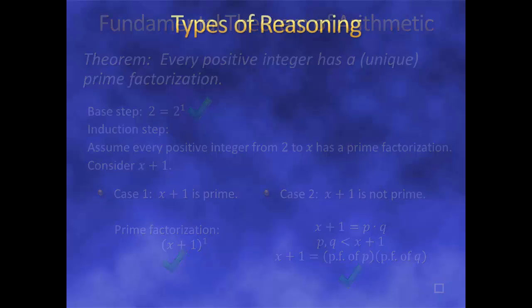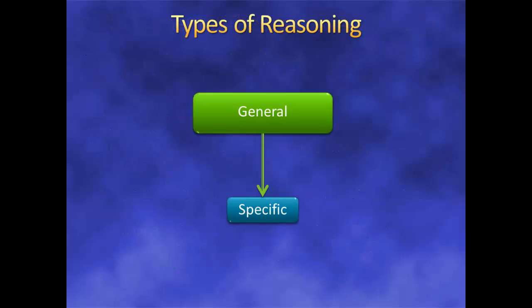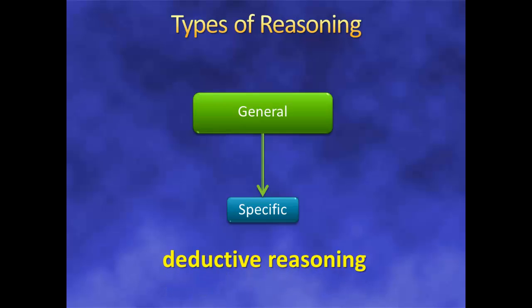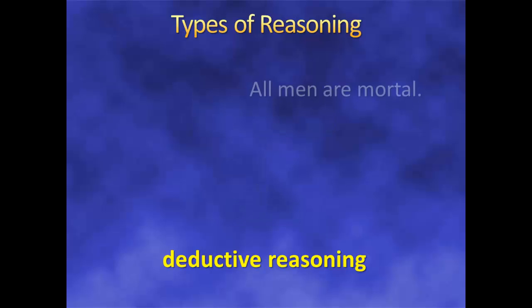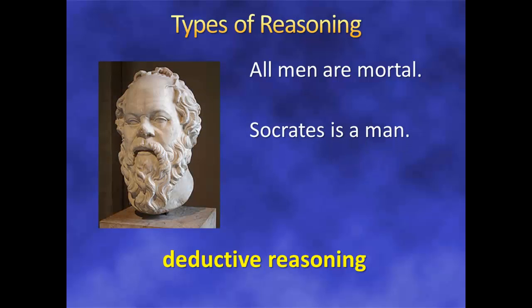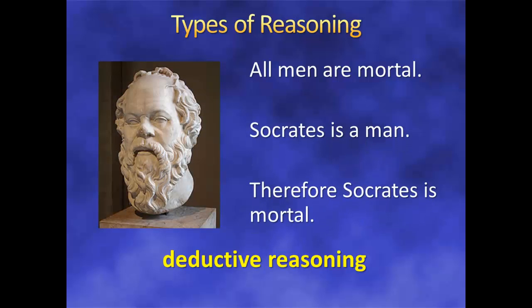By the way, throughout this course we've been looking at basic general principles and applying them to specific situations. This type of reasoning — going from general down to specific — is called deductive reasoning. The classic example is the following syllogism: all men are mortal; Socrates is a man; therefore, Socrates is mortal. We start with a general statement about all men and make our conclusion about Socrates, a specific man, based on that statement. If both premises are true, then so is the conclusion.